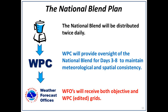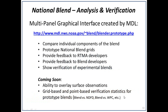The raw blended output will go both to the WFOs and the Weather Prediction Center. WPC will provide oversight of the national blend to ensure meteorological and spatial consistency, and these post-processed grids will also be sent to the WFOs. So in the end, the WFO forecaster will have both sets of data: the raw blended guidance and the WPC-added gridded guidance. Now I'll hand off to John Gagan, who will give an overview of the analysis, verification, evaluation, and training for this project. John will go through the latest information from some of our working groups.